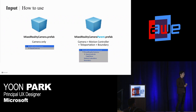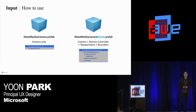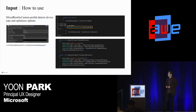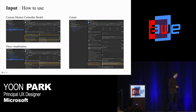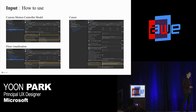The Mixed Reality Camera Parent has some additional components such as motion controller, teleportation, and boundary to support immersive headsets. The Mixed Reality Camera prefab automatically detects the device type, so it optimizes these options for both HoloLens and immersive headsets — you can use this single prefab for both projects. There are also other properties you can customize. For example, you can easily override the motion controller model with your custom 3D model, or customize the floor visualization and the gaze cursor design.